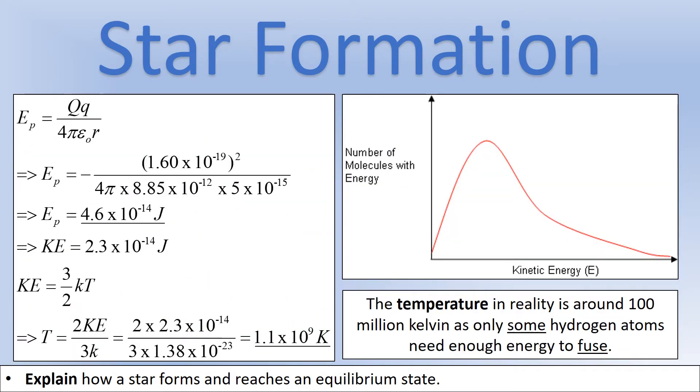In the electric fields part of the course, you will learn that you can calculate the potential energy of two charges using the equation that you can see here. If they're both hydrogen, that's two protons. If we want to get into the range of the strong force, we need to get to a distance of about five femtometers apart. We can put the numbers in and do a calculation. We need to provide 4.6 times 10 to the minus 14 joules of energy to get into the range of the strong force.